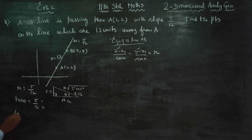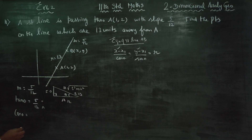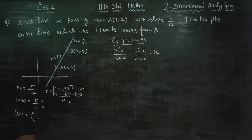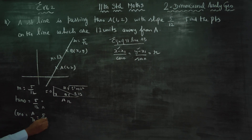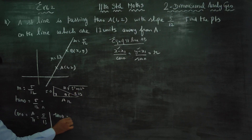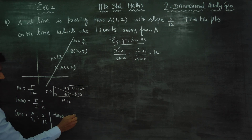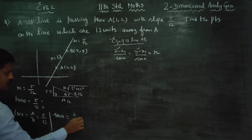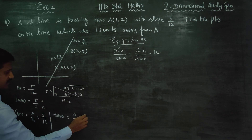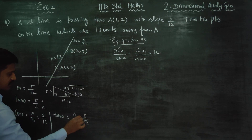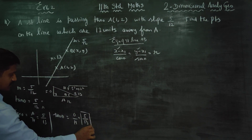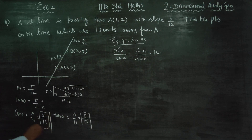First, cos theta is equal to adjacent side by hypotenuse. My adjacent side is 12 and hypotenuse is 13. Coming to sin theta: sin theta is opposite side by hypotenuse. My opposite side is 5 and hypotenuse is 13.